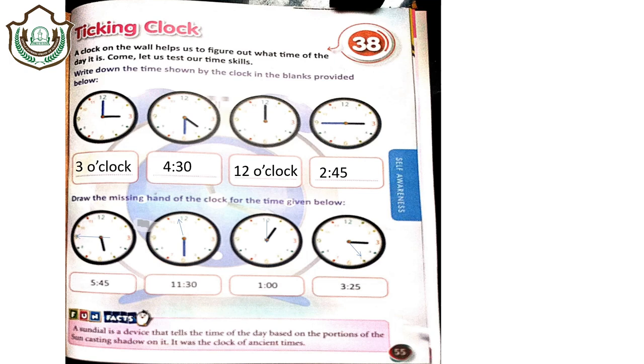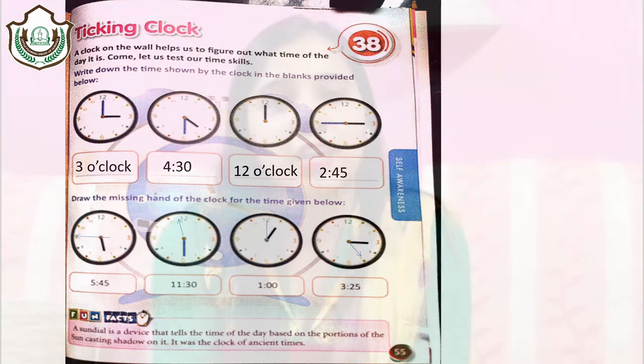For 11:30, the minute hand is on 6 and the hour hand is between 11 and 12. For 1 o'clock, the hour hand is at 1 and the minute hand is at 12. For 3:25, the hour hand is at 3 and the minute hand is at 5. We are done with this chapter and I hope you will now be able to read the clock. I hope you all enjoyed this session. We will meet again in the next session. Till then, goodbye, stay safe, thank you.